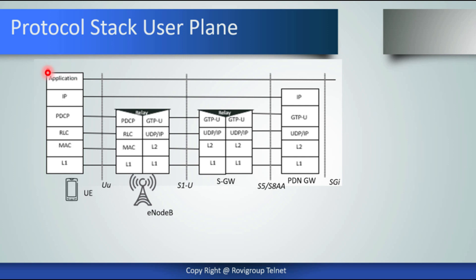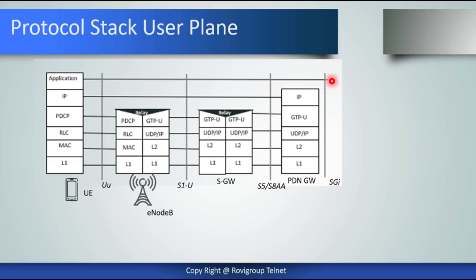The application layer interacts with the peer entity, which is the external ISP provider. The IP layer extends between the UE and the PDN gateway, so IP layer and application layer messages are not processed by the eNodeB or the serving gateway — they are transparently sent to the peer entity or PDN gateway.